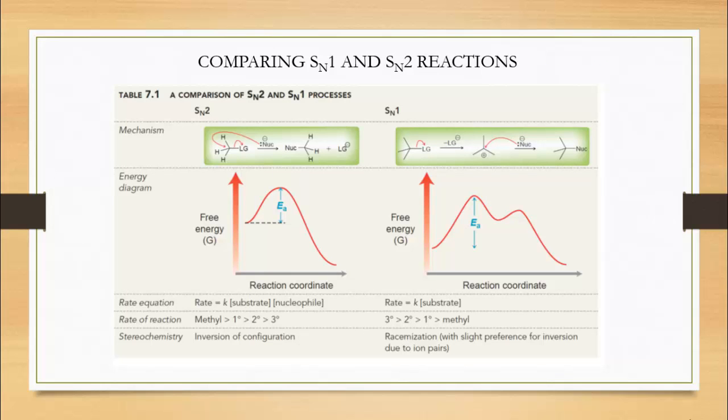So, to recap, both SN1 and SN2 involves two of the four mechanisms we discussed earlier, the nucleophile attack and the loss of the leaving group.